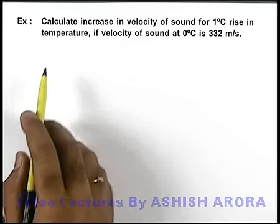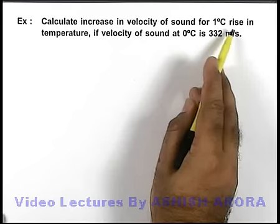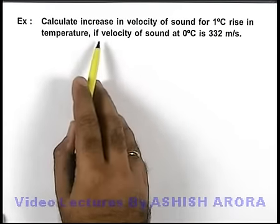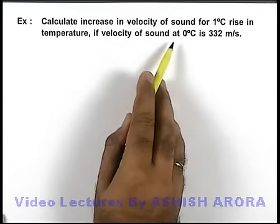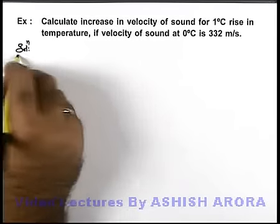In this example, we are required to calculate increase in velocity of sound for 1 degree rise in temperature. It is also given that the velocity of sound at zero degree centigrade is 332 meters per second.